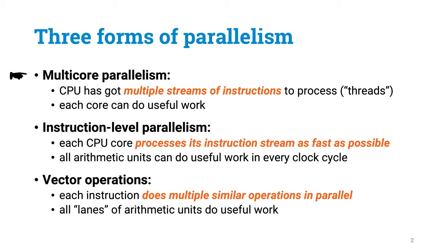With multi-core parallelism, we make sure that all CPU cores have useful work to do. With instruction-level parallelism, we make sure that each CPU core is executing instructions as fast as possible. Finally, with the use of vector operations, we make sure that each instruction does as much work as possible.